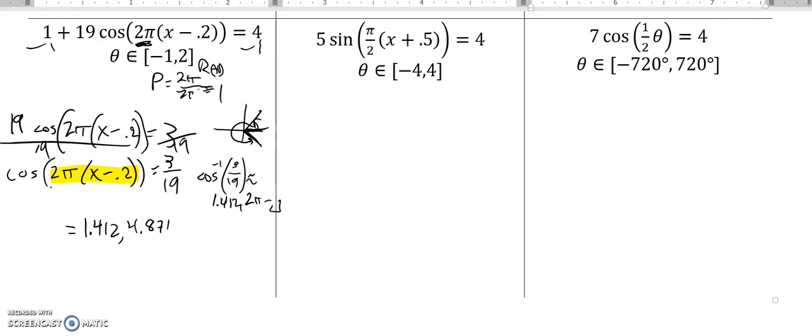Now that's not x, that's what this is equal to. So I still have 2π multiplied by x minus 0.2, so I'm going to divide everything by 2π.